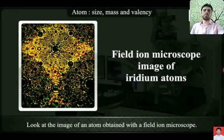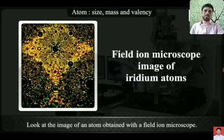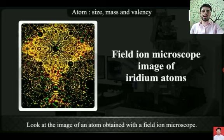Modern instruments such as the field ion microscope and scanning tunneling microscope are used to observe atoms. As you can see on the screen, there is an image of a field ion microscope of an iridium atom, and every speck on that image represents an iridium atom.